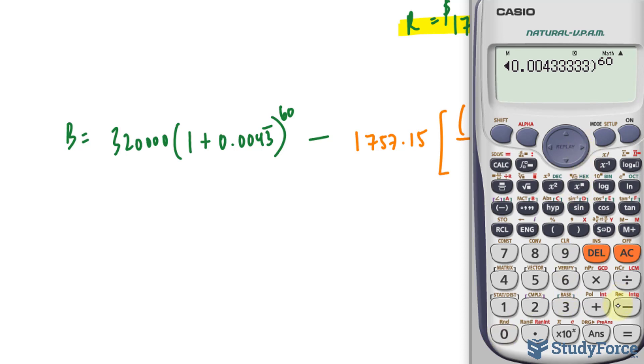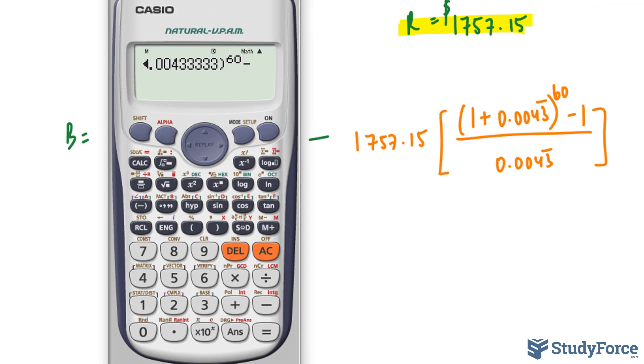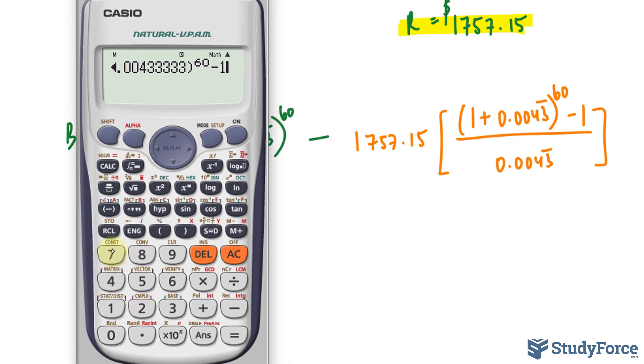Raise that to the power of 60, minus. And now the other expression. 1,757.15. Close. Close. And now we have to put this entire expression into our calculator.